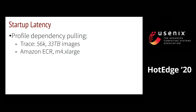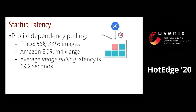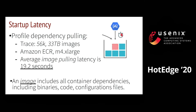For the image or dependency pulling, we profile with more than 50,000 container images hosted on a cloud repository and pull images from a cloud instance with Docker container runtime. The results show that the average image pulling latency is about 20 seconds. An image includes all the container's dependencies including its binaries, libraries, and configuration files. We believe the compute and network resources can be more limited in an edge setup, and the dependency pulling latency can only be worse.